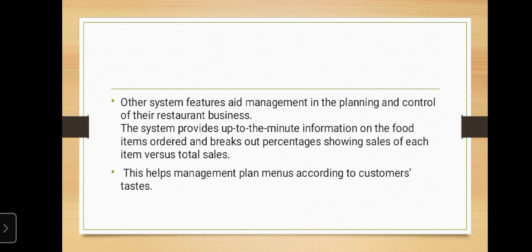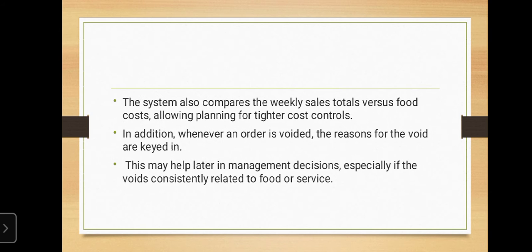Other system features aid management in the planning and control of their restaurant business. The system provides up-to-the-minute information on the food items ordered and breakout percentages showing sales of each item versus total sales. This helps management plan menus according to customer preferences.